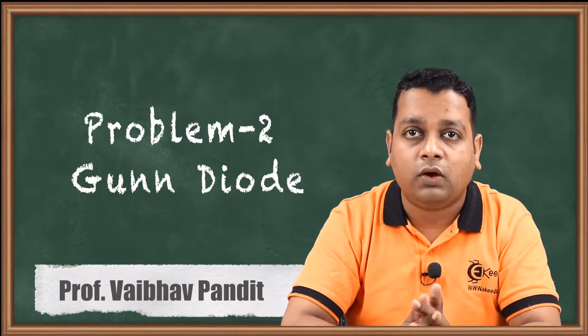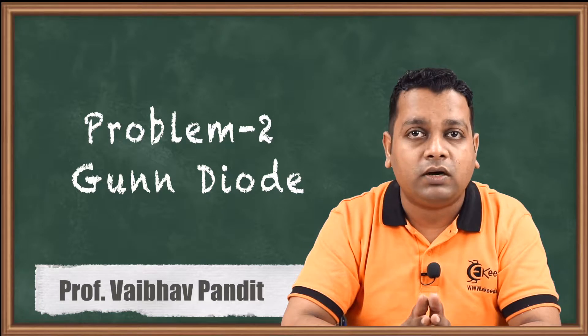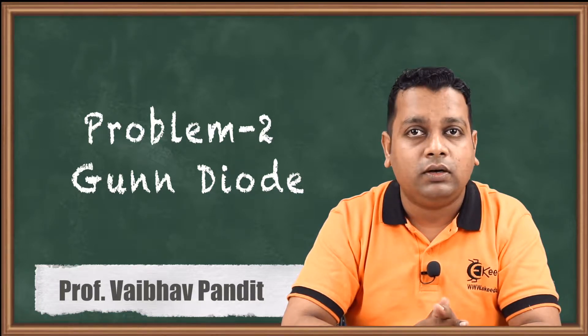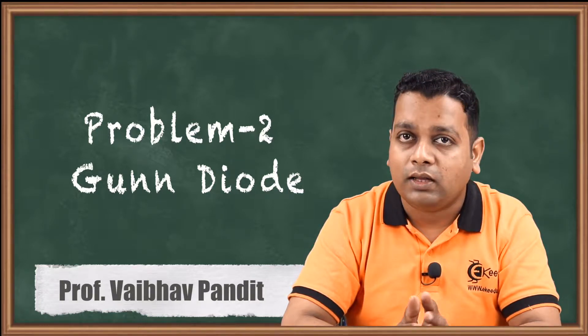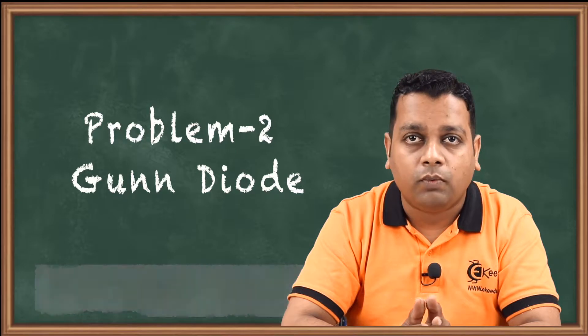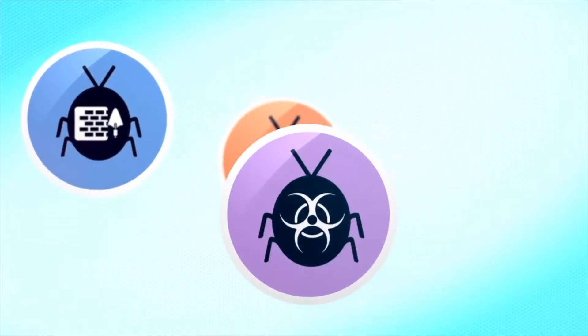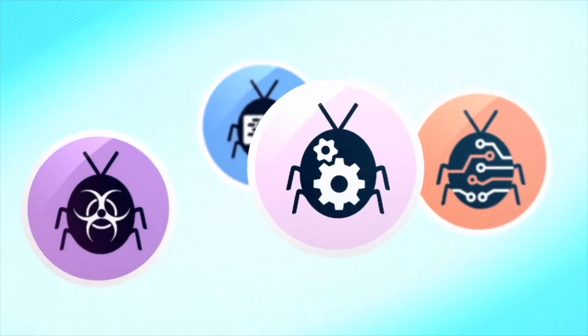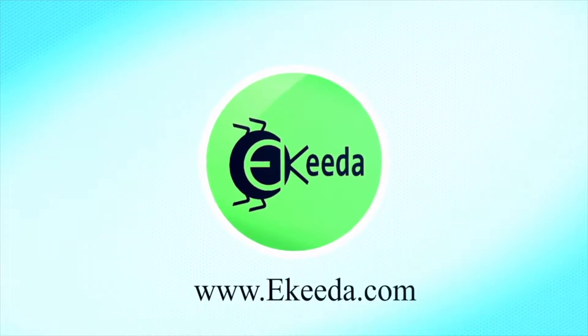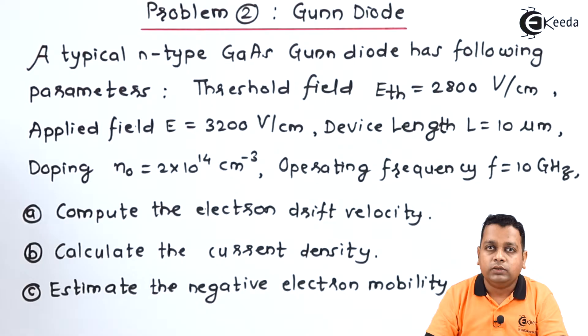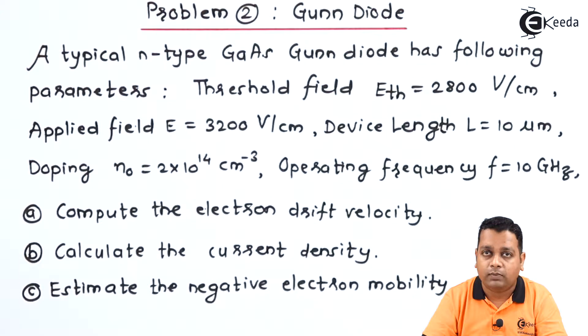In the previous video we went through problem number one, where we computed the conductivity for the device. Let us take another problem to compute a few of the other parameters of the Gunn diode operation. We start with the problem statement for problem 2.